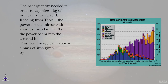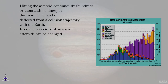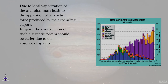The heat quantity needed to vaporize one kilogram of iron can be calculated. Reading from Table 1 the power for the mirror with radius R = 50 meters, in 10 seconds the power beamed into the asteroid yields a total energy that can vaporize a calculable mass of iron. Hitting the asteroid continuously hundreds or thousands of times, it can be deflected from a collision trajectory with the Earth. Even the trajectory of massive asteroids can be changed through local vaporization, which produces a reaction force from the expanding vapors. In space, the construction of such a gigantic system should be easier due to the absence of gravity.